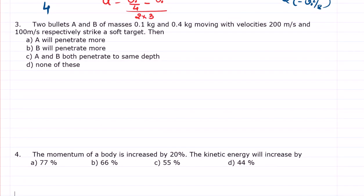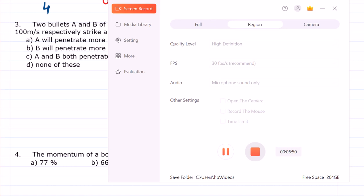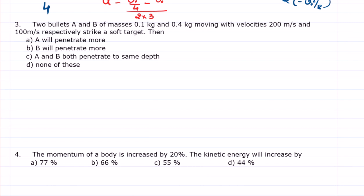Two bodies A and B, read it carefully. Two bodies A and B of masses 0.1, okay, directly we take one as 0.1, second one as 0.4, with velocities 200, we can call it as 200, so velocity of the second one is 100. Okay, all are SI units only.